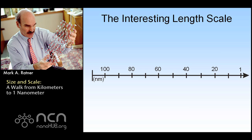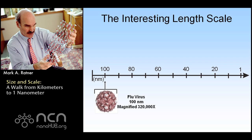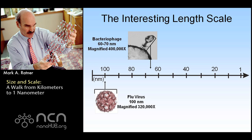Let's look at some nano objects that actually exist on this length scale. That's a flu virus — magnified 300,000 times — with beautiful spherical symmetry. He's a nanoparticle; a large nanoparticle. Bacteriophage is a slightly smaller nanoparticle. Those are naturally occurring nanoparticles.